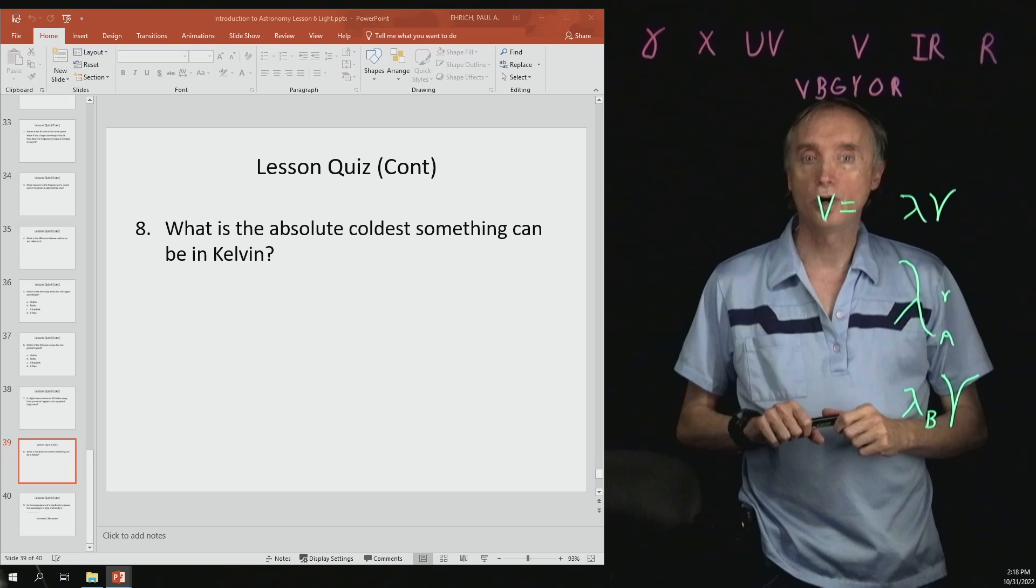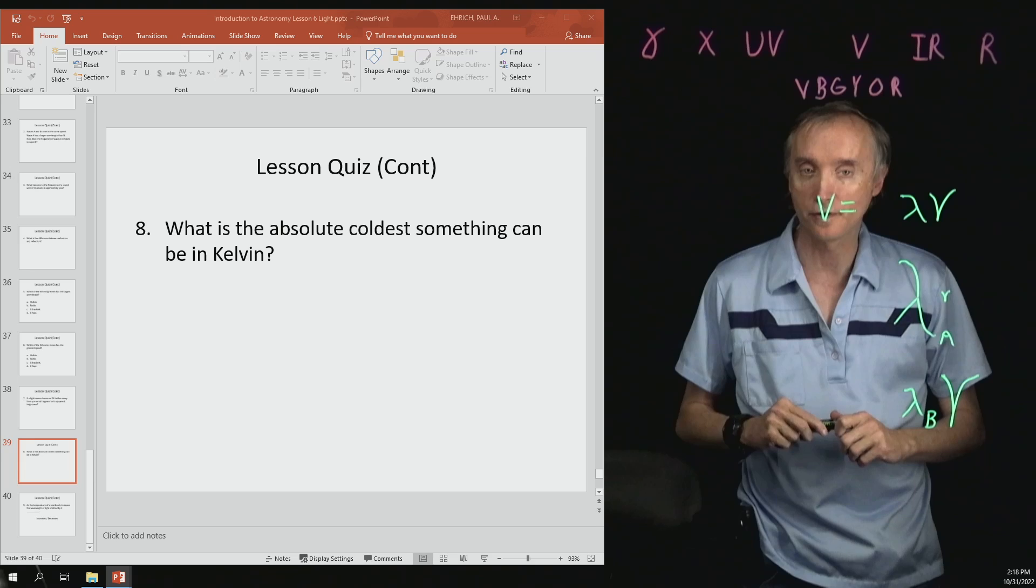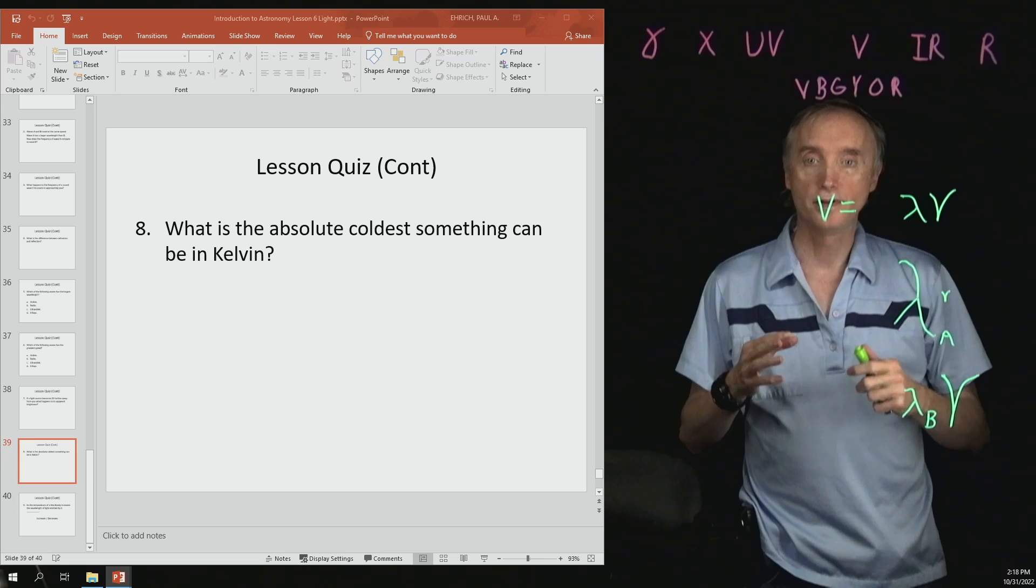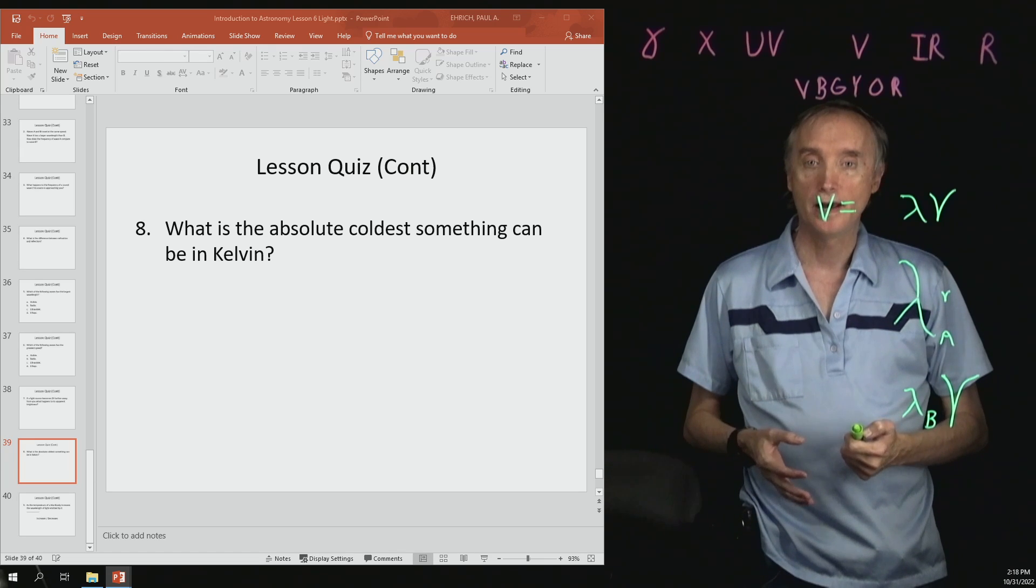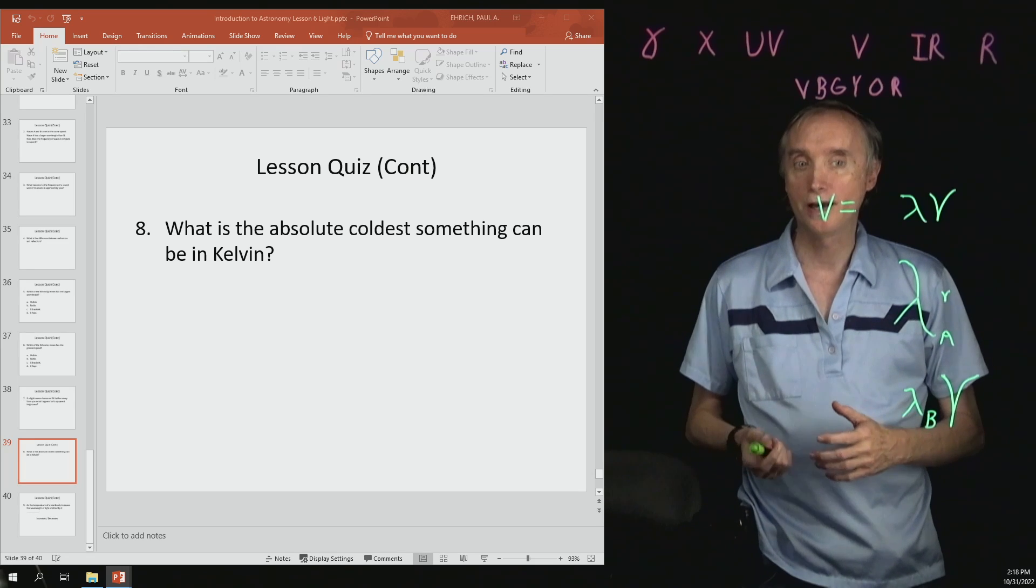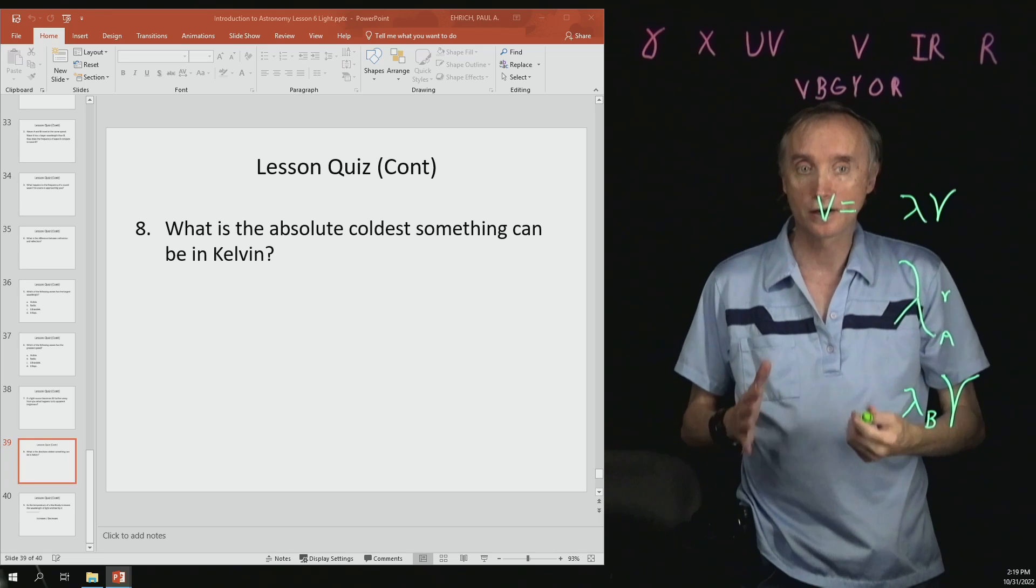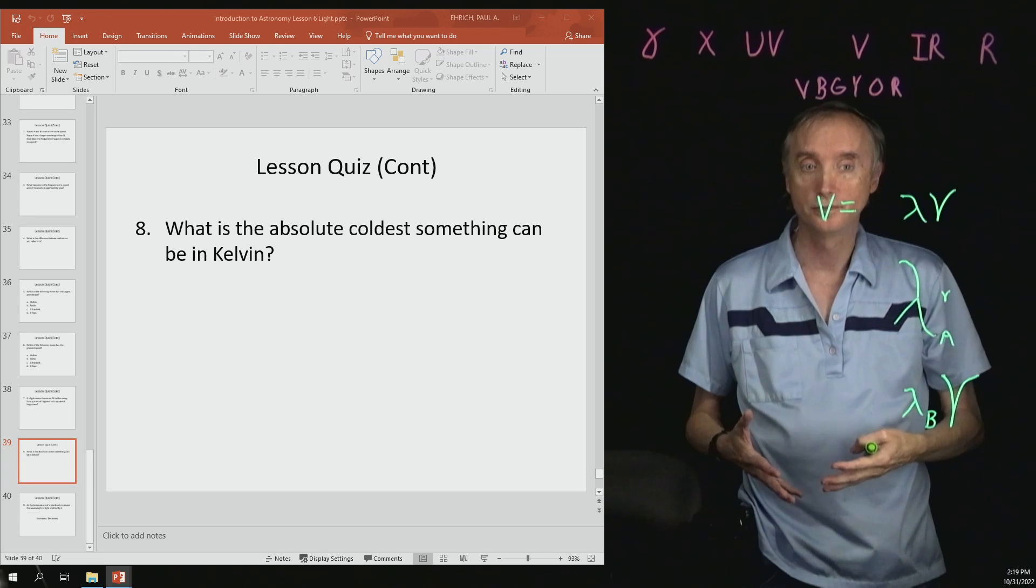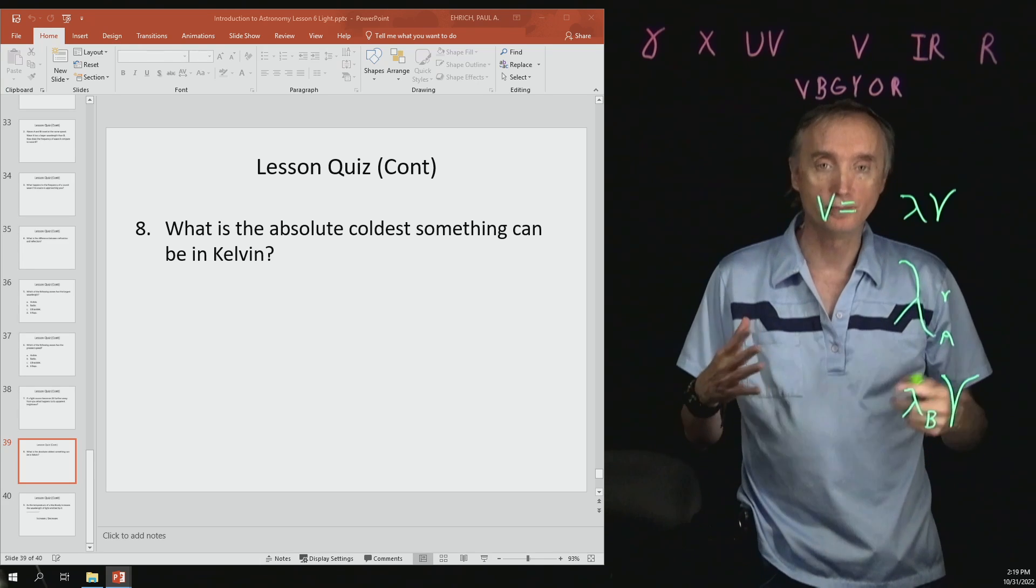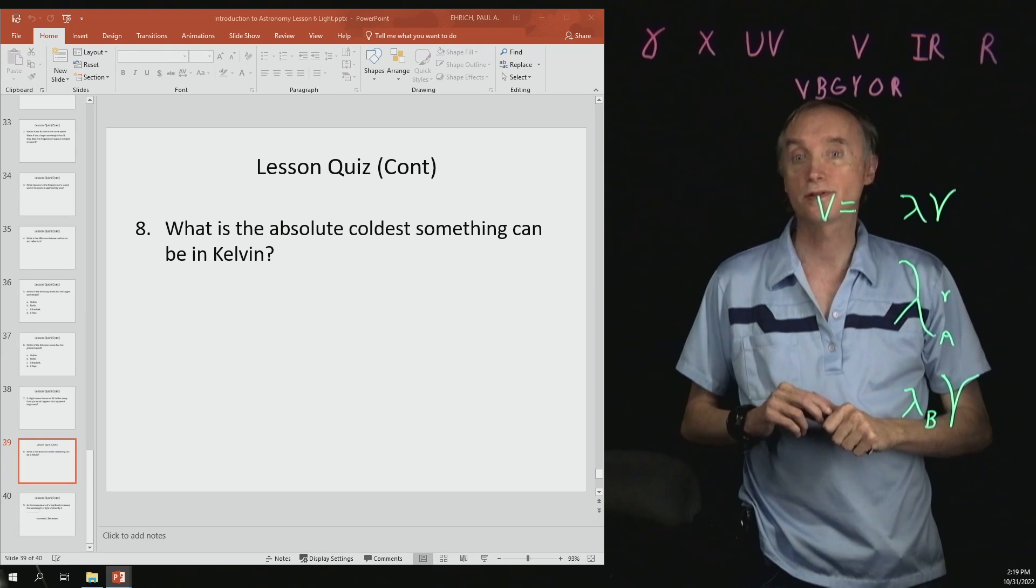What's the absolute coldest something can be in Kelvin? Well, they don't call it absolute zero for nothing. So absolute zero, zero on the Kelvin scale, is the absolute coldest something can be, and at that temperature, things would stop moving because temperature was related to the kinetic motion of molecules. So as things get colder, they move slower and slower, kind of like you do on a very cold winter day. You're moving around slow because you're so cold. Molecules do the same thing. So they're moving slower, and then when you reach absolute zero, they would actually stop moving.